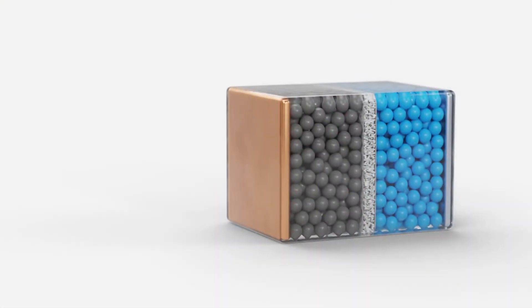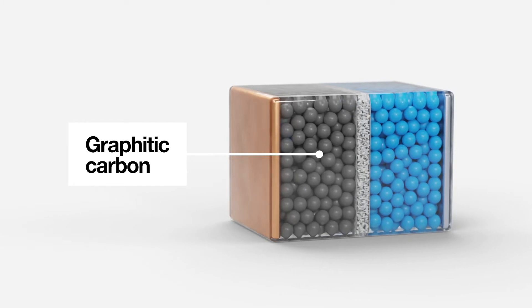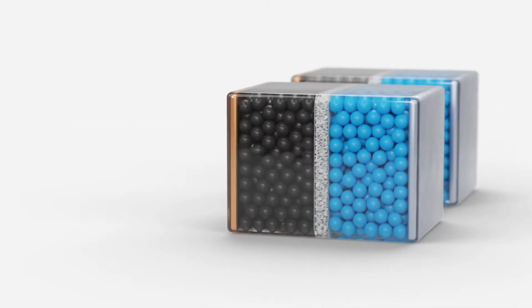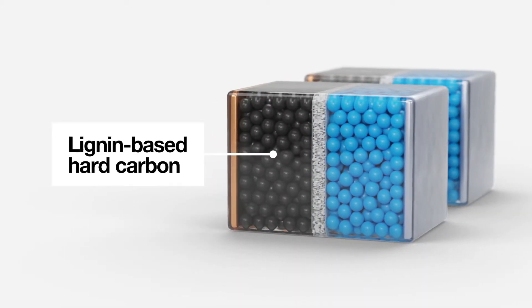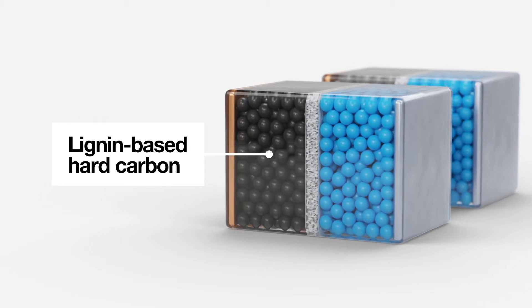Today lithium-ion batteries consist partially of graphite, which is often obtained or produced under less than satisfactory conditions. So what we're doing now is replacing fossil-based graphite with renewable hard carbon.